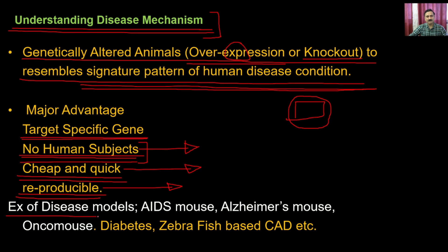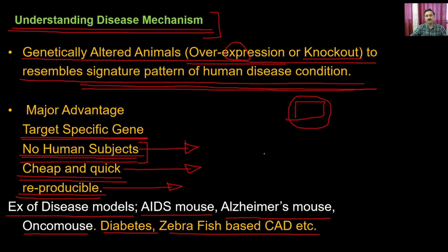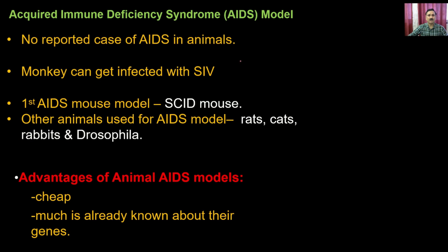We have different types of transgenic disease models: the AIDS mouse model, the Alzheimer mouse model, the Oncomouse model, the diabetes model, and zebrafish-based cardiovascular disease models. Let us discuss some of these and understand how transgenic animals contribute to understanding disease mechanisms. The first model is the acquired immunodeficiency — the AIDS model.